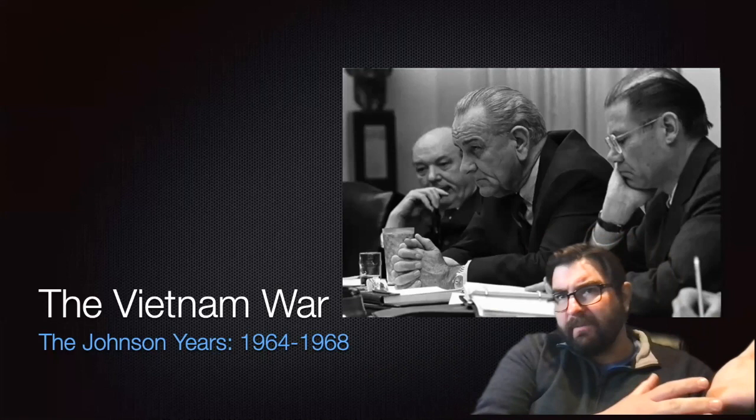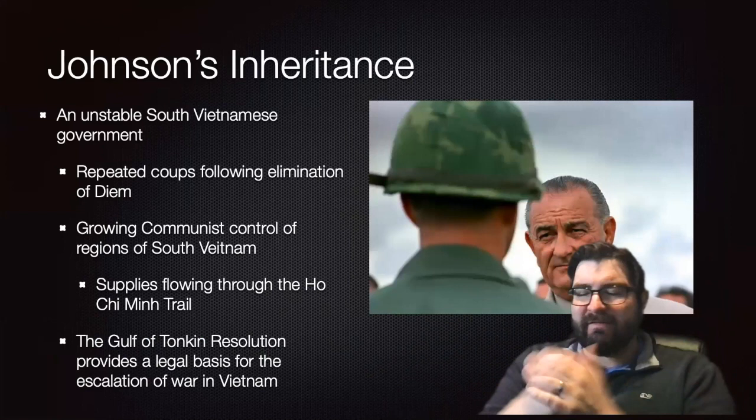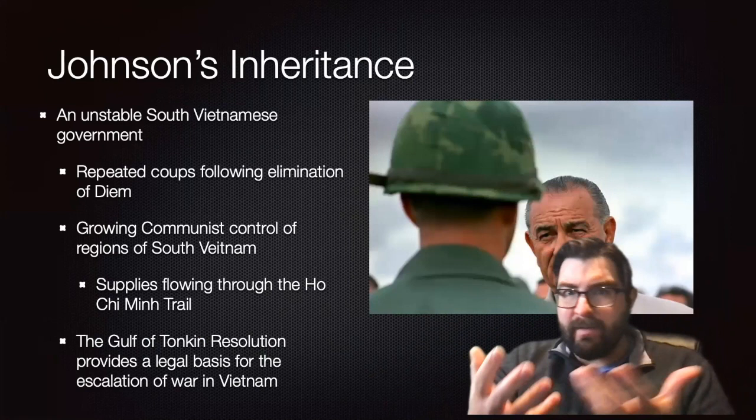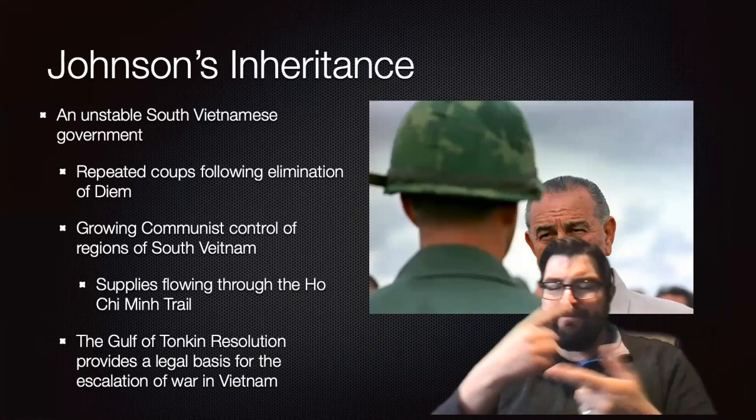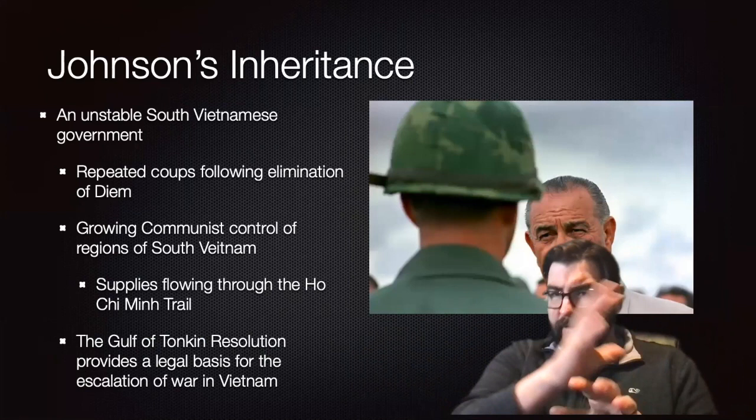Johnson comes into the presidency after the assassination of John F. Kennedy, and he inherits an extremely unstable situation in South Vietnam. The government of South Vietnam is in turmoil after the coup that overthrew Ngo Dinh Diem, and following that, there will be repeated coups of subsequent administrations. There's growing communist control of regions of South Vietnam, particularly in the rural areas.